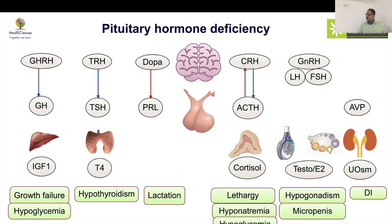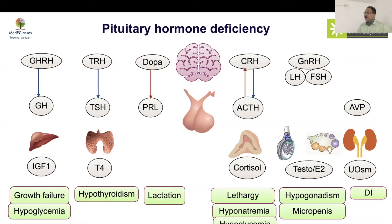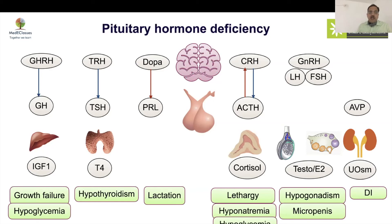Many pituitary deficiencies may be isolated. GHD is usually isolated unless a syndromic picture is present. Gonadotropin deficiency is also typically isolated, so a full pituitary function test is not always mandatory — for example, in a well-growing child with anosmia and isolated suspected Kallmann syndrome. However, thyroid and cortisol must always be evaluated before GH workup.